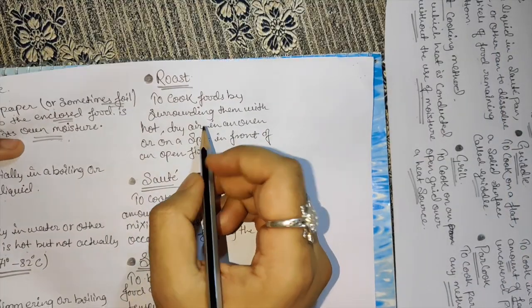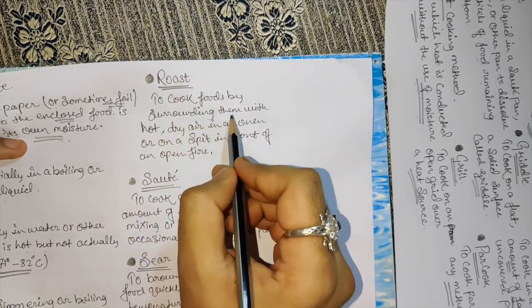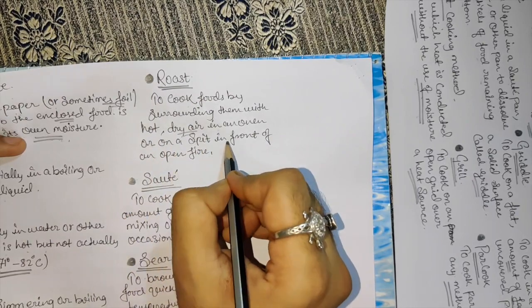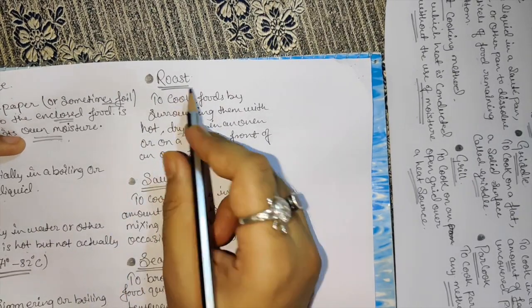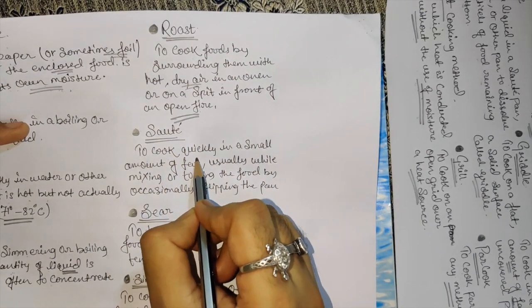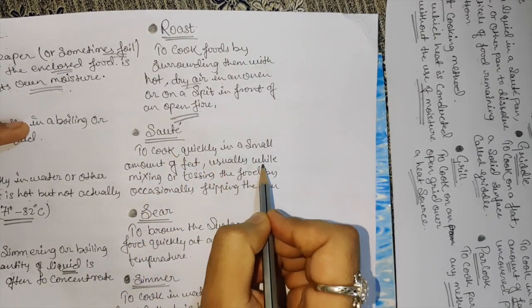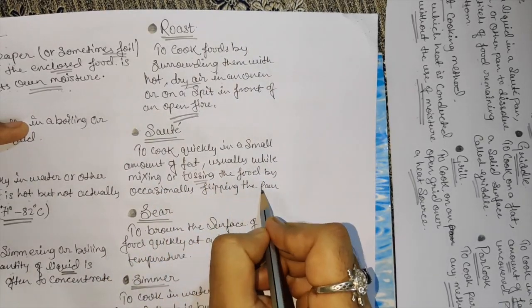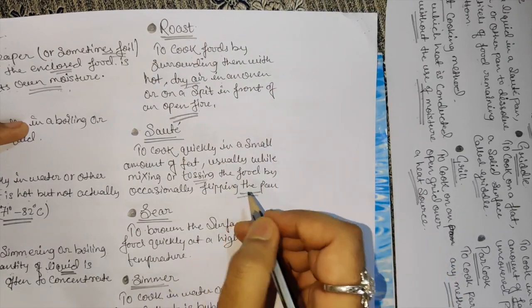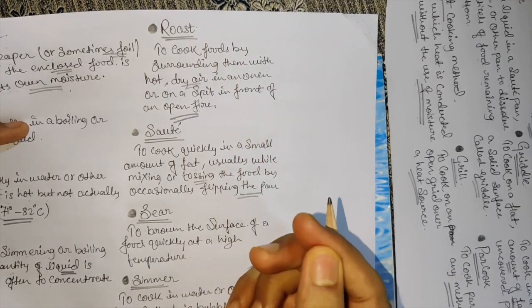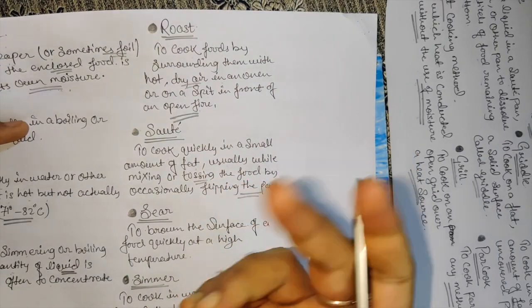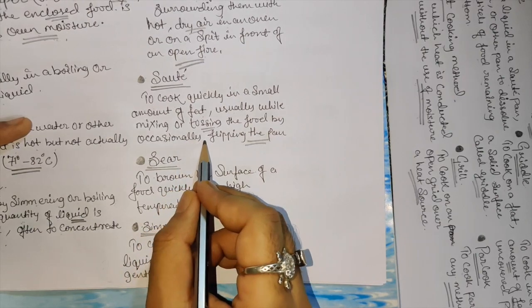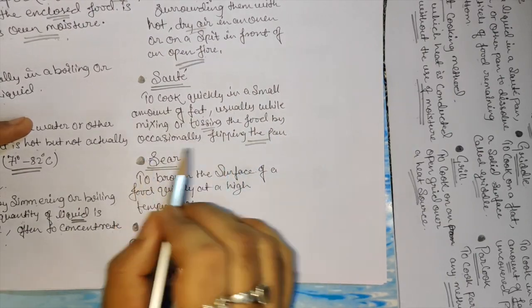Roast - to cook food by surrounding them with hot dry air in an oven or on a spit in front of open fire. Sauté - to cook quickly in small amount of fat, usually while mixing or tossing the food by occasionally flipping in the pan. Very less fat we use. Just a pan, a little bit of fat, some vegetables, and toss it up.